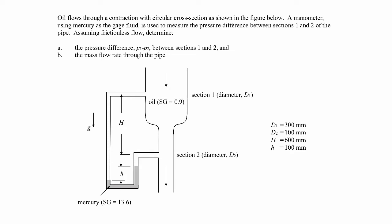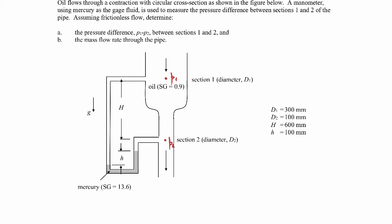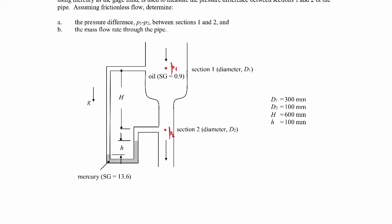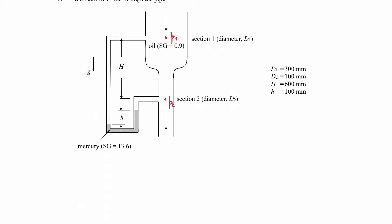We're asked to find the pressure difference between points 1 and 2 — so we want to know p1 and p2 — as well as the mass flow rate through this pipe section. To analyze the pressure difference, we're going to solve that using the manometer that's attached to the pipe.